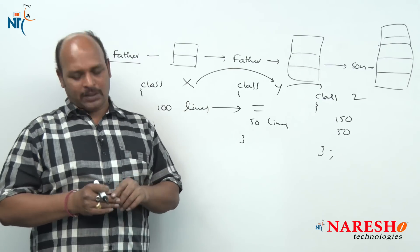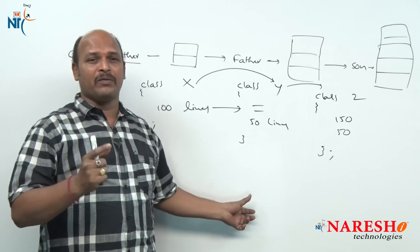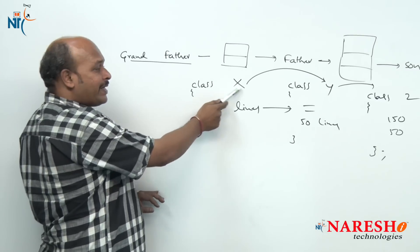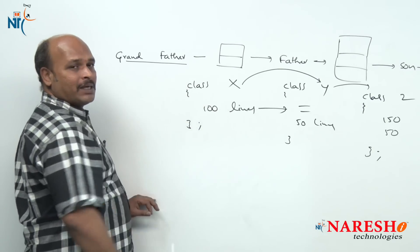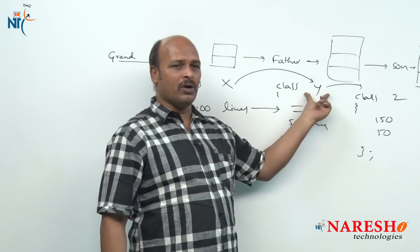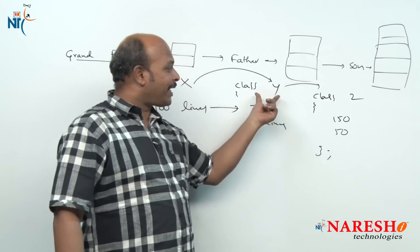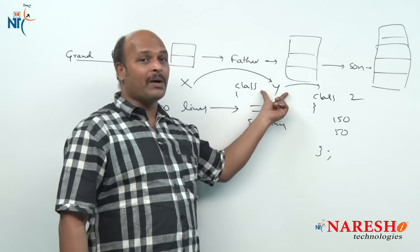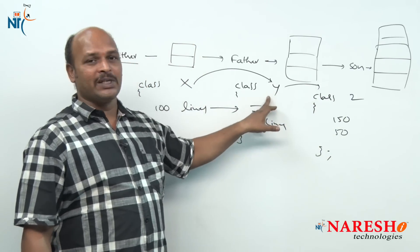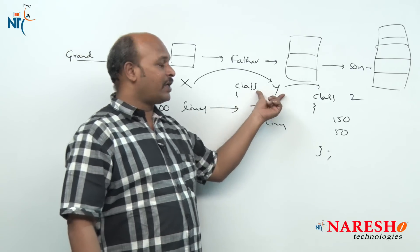That is why inheritance provides the features of reusability and extensibility. Class X is called the base class or super class. Class Y is called the derived class or subclass. Class Z is derived from class Y, making Y the base and Z the derived. In this situation, class Y is called an intermediate base class.